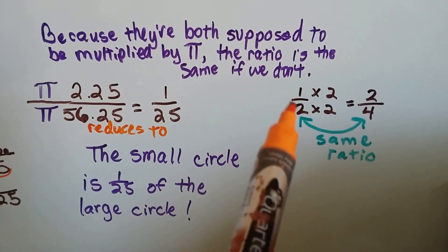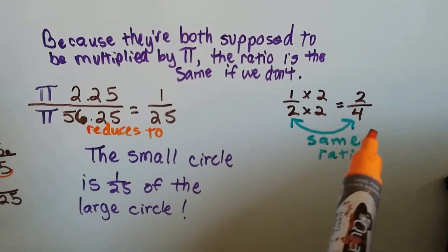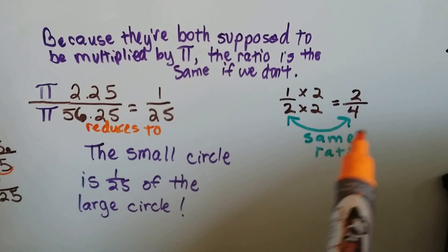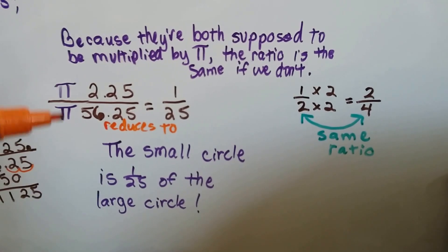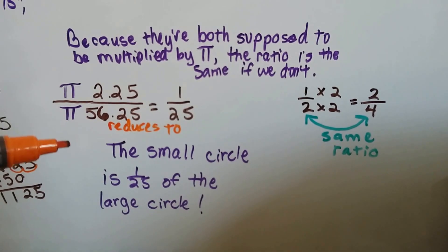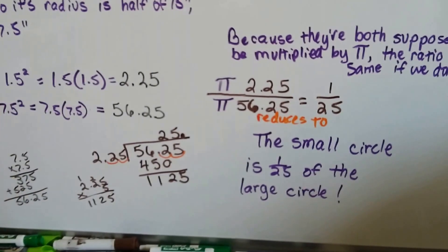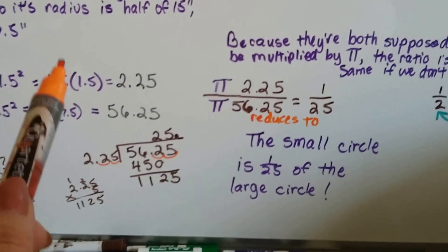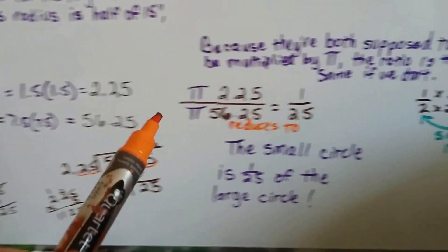Well, if I had 1 over 2, and I multiplied both of them by 2, then I'd have 2 over 4. And it's the same ratio. This is still half. So because we would be multiplying them both by pi, it's the same as if we didn't. Over here, we had to multiply them to themselves, so that was different. We had to do that to expand the exponent.